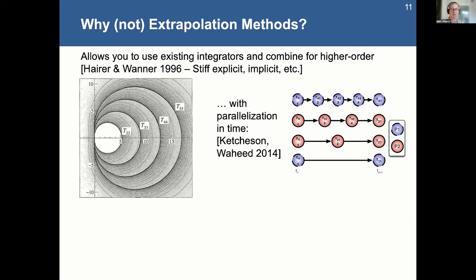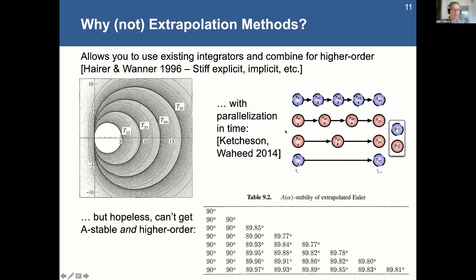You can get a certain level of parallelism out of this thing as you do more and more extrapolations. And since I'm talking about a 17th order method, you can imagine that this might be beneficial to do more and more of these in parallel. So then the issue with these, though, is that you can't really get very far with wave equation. You know, backward Euler, for example, if that's the basis of your extrapolation method here, you can't get A-stable and higher order.